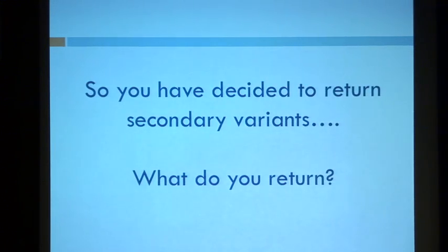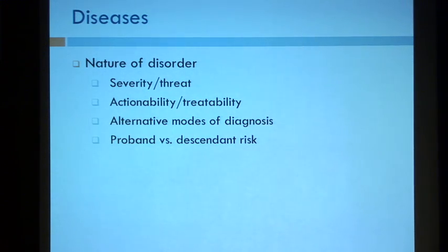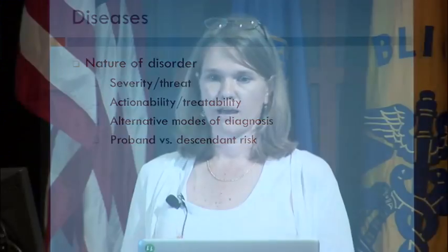Assuming you've decided you're going to return your secondary variants, what do you return? I think about this in three different levels: diseases that are important to my patients, the genes I know for sure cause those diseases, and variants that I feel have enough evidence of causation to return. The diseases should have an obvious and severe threat, should be actionable and treatable. If your patient is going to be diagnosed with the disorder another way — like albinism, which is obvious — you don't need to return that. But if it's something not obvious, maybe a susceptibility variant, that's something you should consider returning.